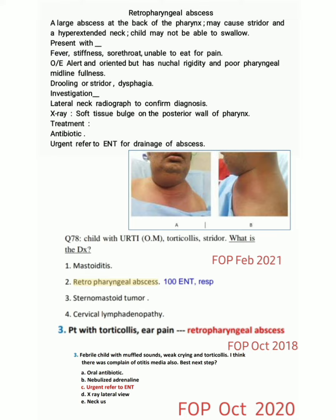The clinical presentation of Retropharyngeal abscess includes fever, stiffness, sore throat, and unable to eat due to pain. On examination, the patient is alert and oriented but has nuchal rigidity and poor pharyngeal midline fullness. Drooling, stridor, and dysphagia are also present.